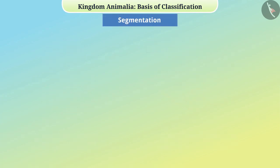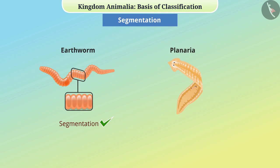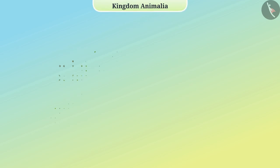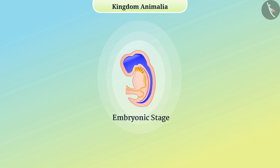Segmentation: The body of some animals like earthworms is divided into hierarchical segments on both external and internal sides, while the body of some animals like Planaria is not fragmented. Classification of Kingdom Animalia can also be done on the basis of the presence of a rod-like structure called a notochord or a backbone.